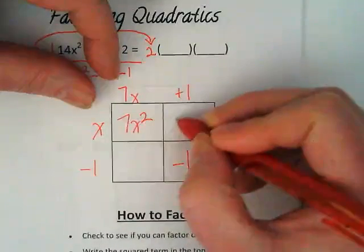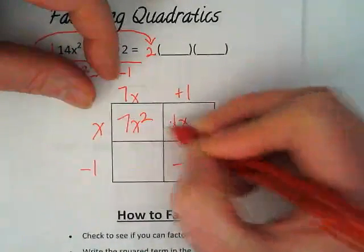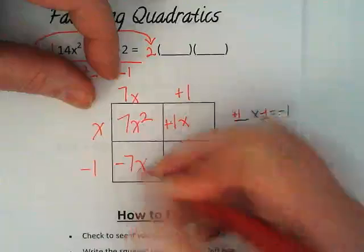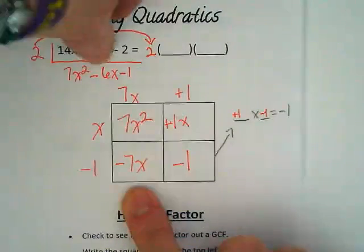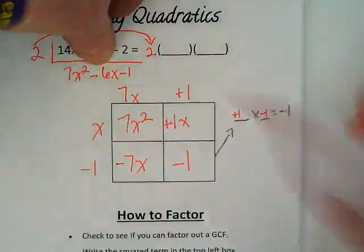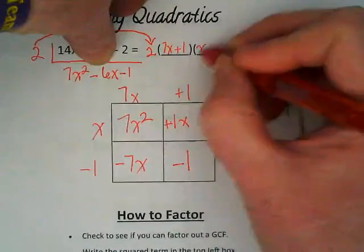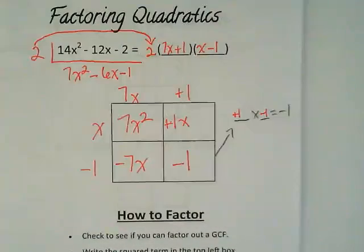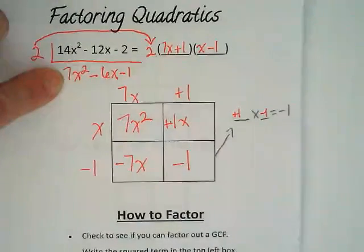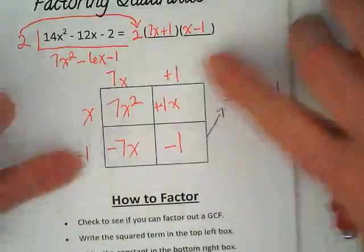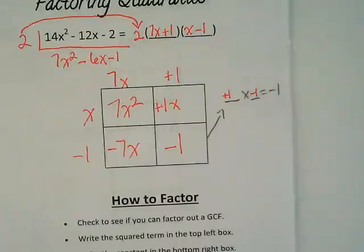And now we know that this one is 1x. And what's this one? -7. Does negative 7x plus 1x give us our negative 6x? Yes. So this is 7x plus 1, and this is just x minus 1. It's a little bit more challenging when there's a number in front here. It just means that this part here comes from this, not just from these sometimes. We're going to keep going with this on the inside.